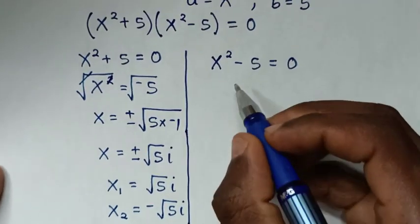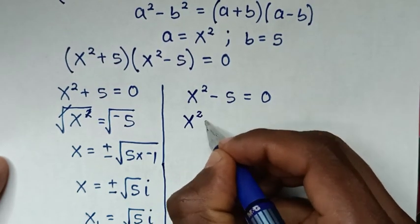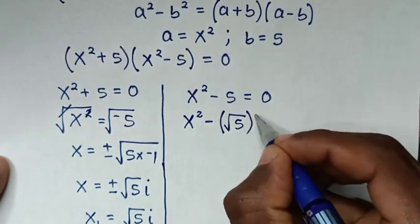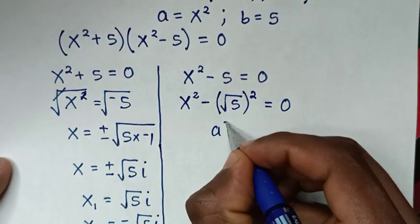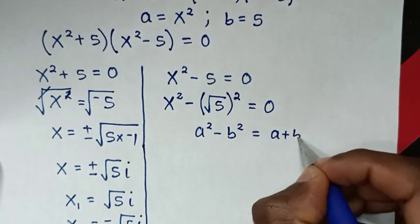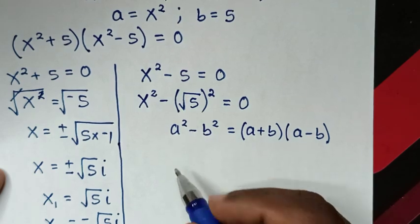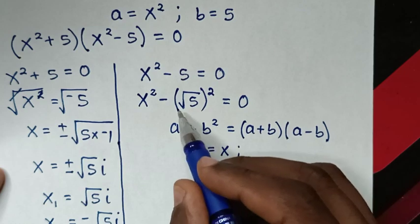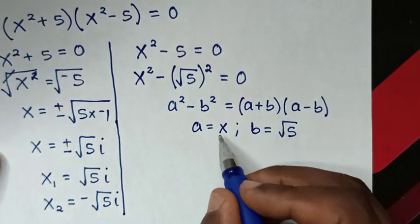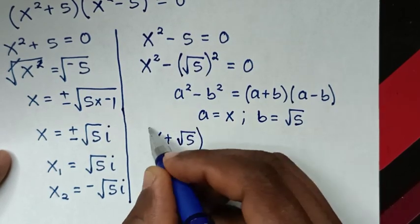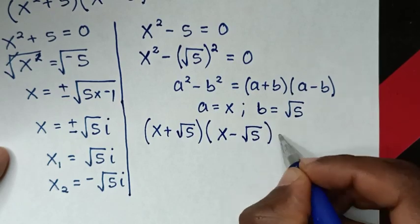Now from the second case, we rewrite x² - 5 as x² - (√5)² = 0. Applying the difference of squares rule again with a = x and b = √5, we get (x + √5)(x - √5) = 0.